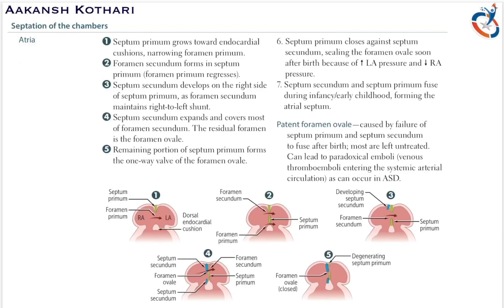How is the atrial septum formed? The septum primum grows towards the endocardial cushion, the foramen secundum is formed, then there is formation of septum secundum. The septum secundum grows downwards, there is closing of foramen ovale, which leads to formation of fossa ovalis.